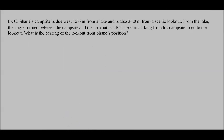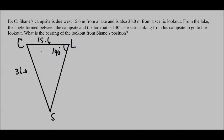Let's do our last question. Shane's campsite is due west 15.6 meters from a lake and is also 36 meters from a scenic lookout. Let's draw Shane, here's the lake and Shane is here. Let's call it C, his campsite, and it's 15.6 meters due west. And he's also 36 meters from a scenic lookout, so let's call that S, and we know this is 36.0 right here. And the angle formed between the campsite and the lookout is 140 degrees. From the lake looking from the campsite to the scenic lookout is 140 degrees. We'll label these little L, this will be little S, and this will be little C.